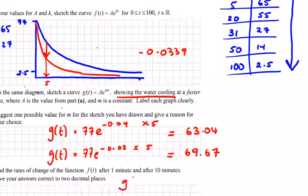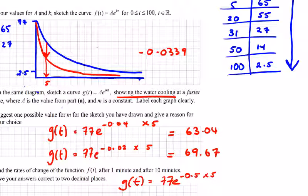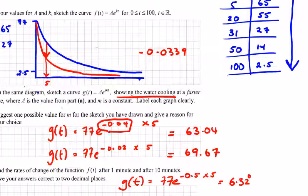And I'll just check one more just to show G of T if K was equal to minus 0.5, say, much higher value. That would give us the water cooling really, really quickly. After five minutes, it would be 6 degrees or 6.32. So what value are we going to choose for K here? We'll choose, for the cool quicker, we'll choose 0.04, I think, in this question.